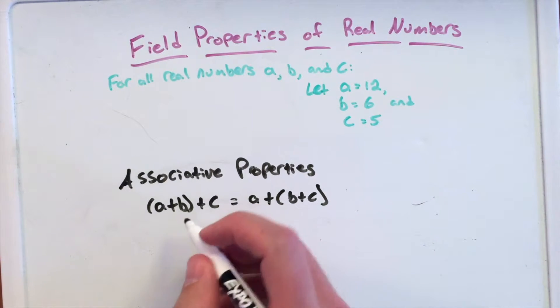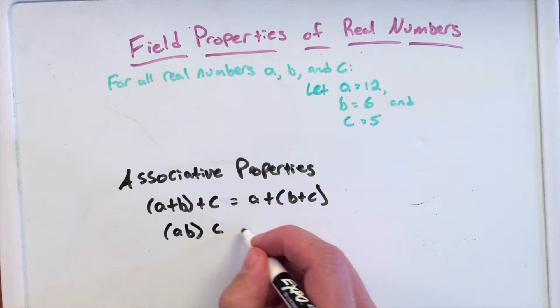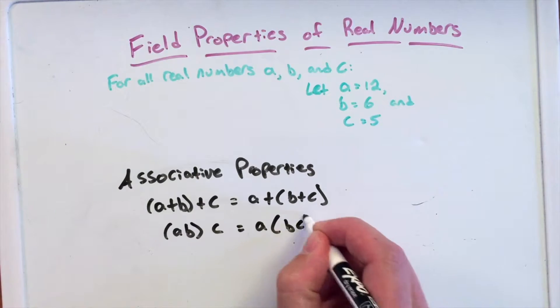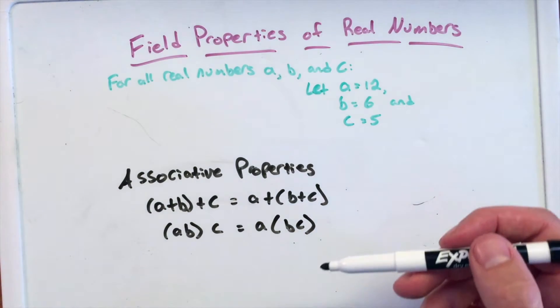The same thing here with multiplication. (A×B)×C is the same thing as A×(B×C). There's associative property of addition, associative property of multiplication.